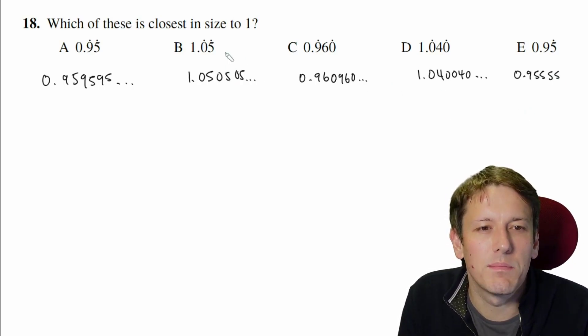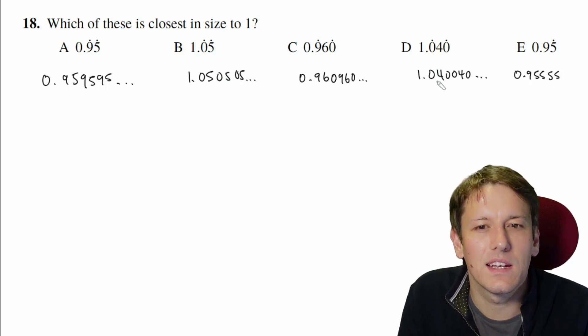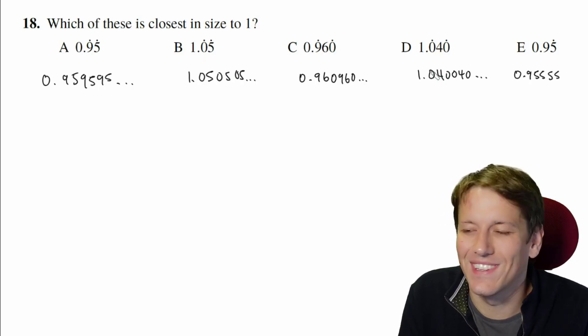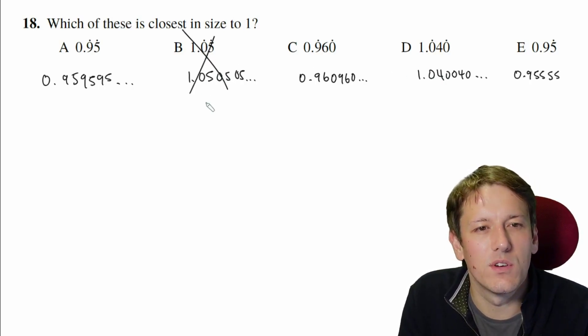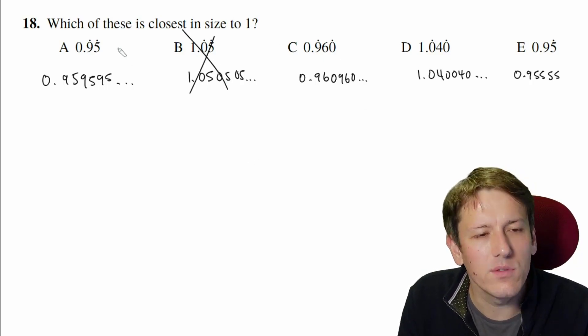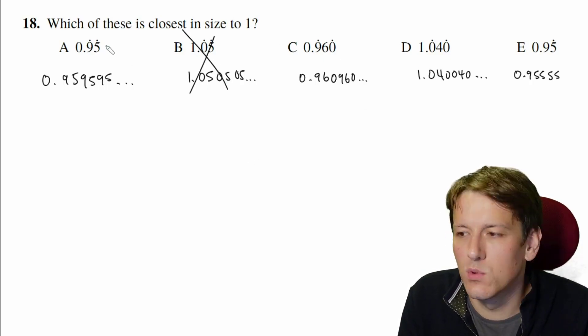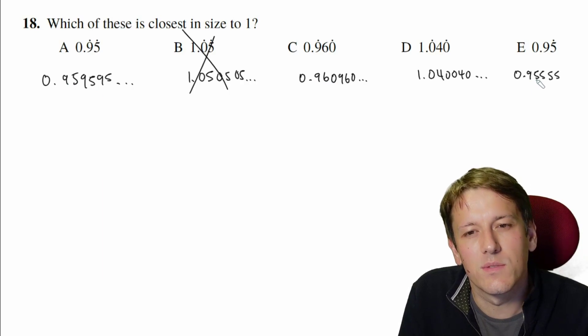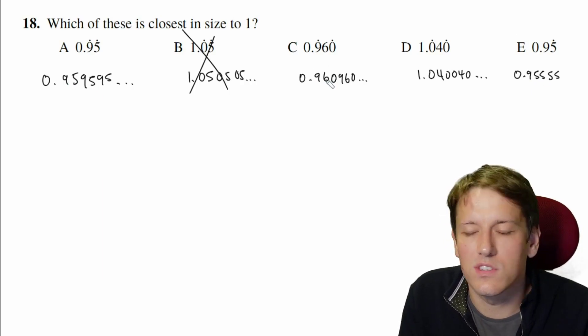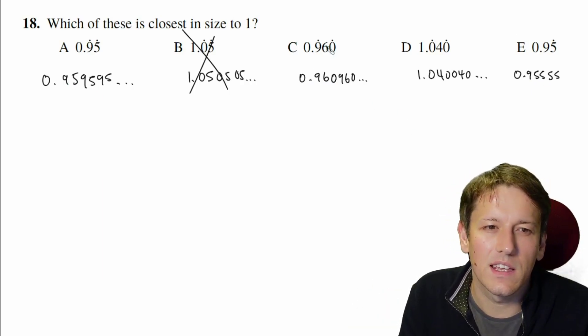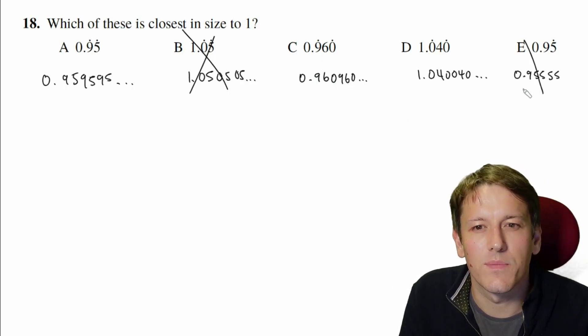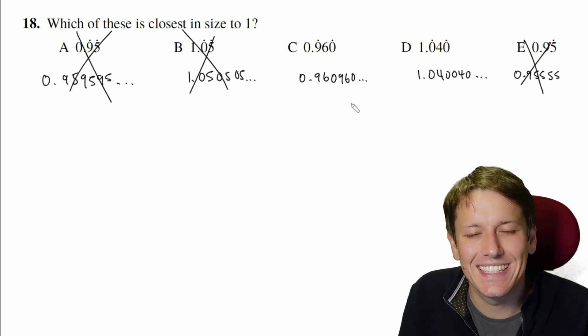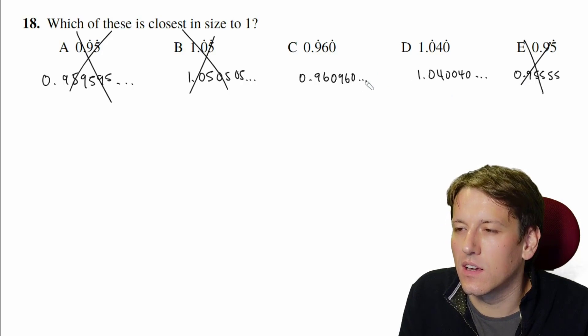So let's look at the ones that are bigger than 1 first, we can clearly see out of B and D that B is further from 1 than D is, because it's bigger than 1 and it's larger. So we're not going to say the answer is B. Out of the ones that are smaller than 1, now the closest one, well this one's 0.95, this one's 0.96, this one's 0.95 again, so actually the closest one to 1 from underneath is clearly this one here, 0.960960. So the race now is just between C and D.